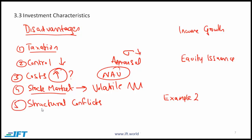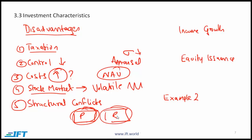The next point has to do with structural conflicts. Many real estate entities are organized as up REITs or down REITs, where we have a concept of a partnership and REIT company. Similar to the agency problem in corporate finance, there may be conflicts of interest between the partnership and the REIT shareholders. There isn't much detail on this, so understanding it at a high level is all we really need.